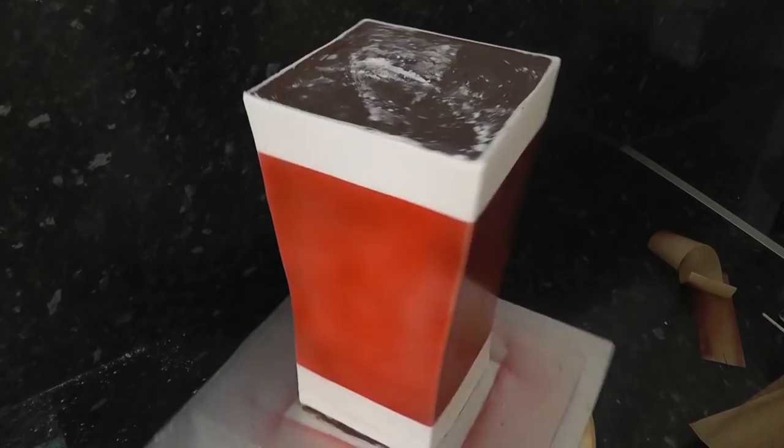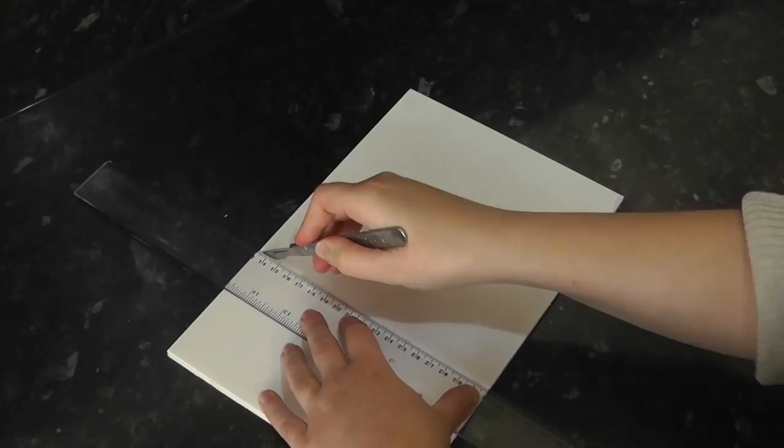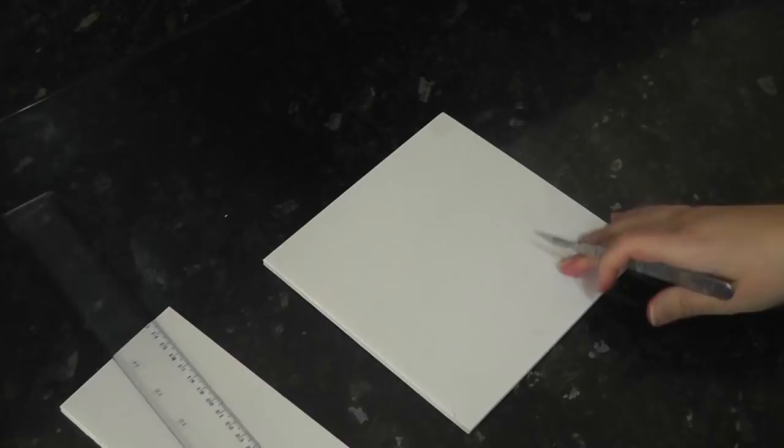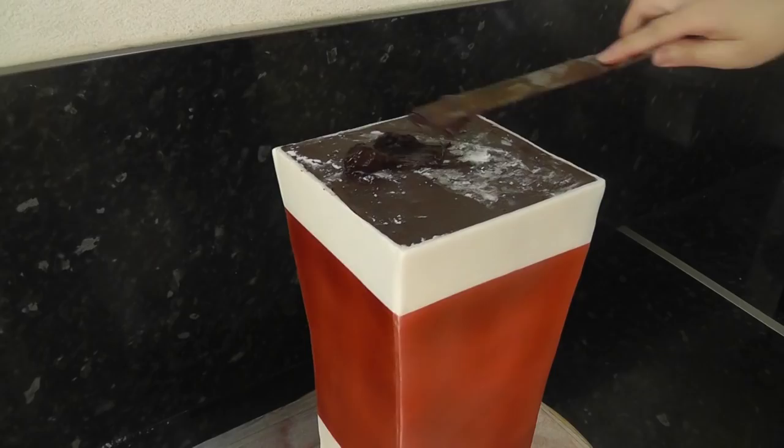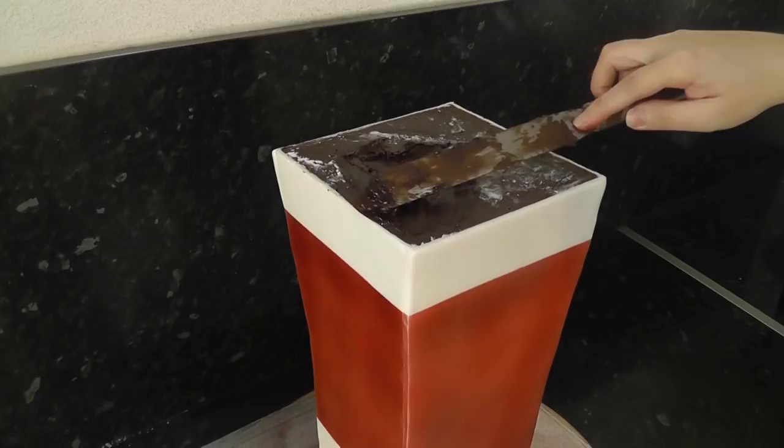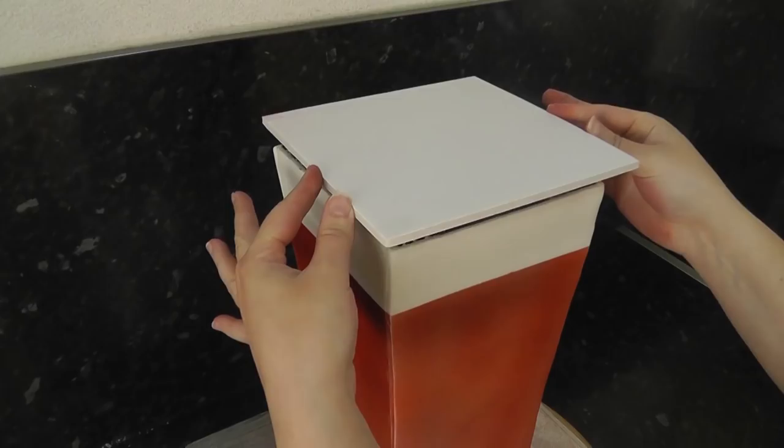For the top part of the cake, we are using foam core again. The reason for this is that it's going to house a lot of toppers and a lot of wires. So the entire top of the building can be removed all in one piece and it can be kept as a keepsake if wanted. This square is roughly 7 inch.